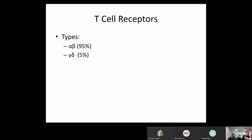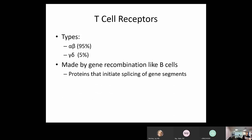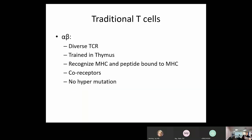The proteins that initiate the splicing of gene segments in that recombination are RAG1 and RAG2. The segments rearrange to form either the alpha-beta or gamma-delta TCR. Alpha-beta TCR-containing T cells are called traditional T cells — 95% of our cells. They have diverse TCR, more diversity than gamma-delta. These cells are trained in the thymus and recognize peptides bound to the major histocompatibility complex (MHC).